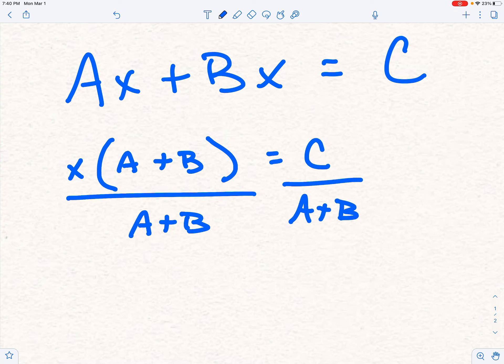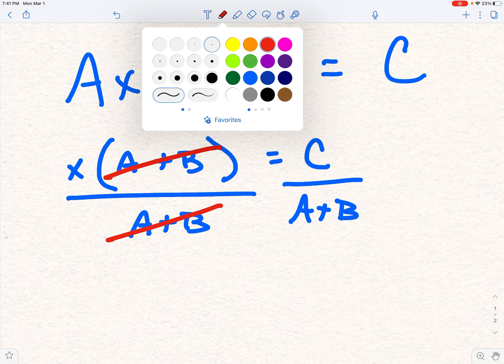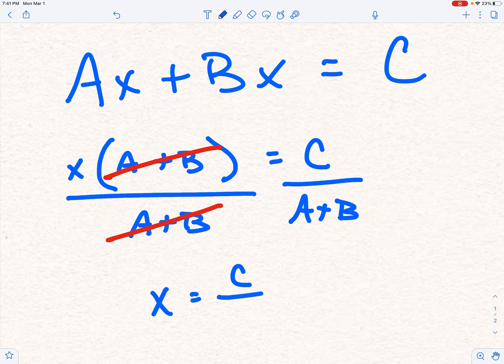I can grab my favorite pink pen, sorry, red. And when I cancel that out, I'm left with x equals c over a plus b. So that's the concept, right? So we're going to go ahead and take the two x's and we're going to put them into one x using factoring.